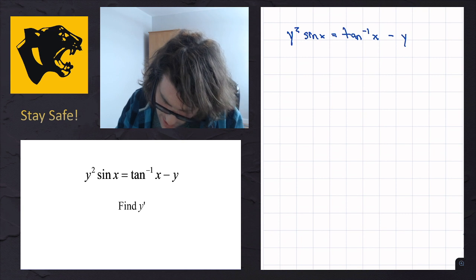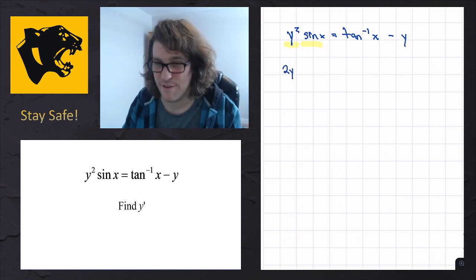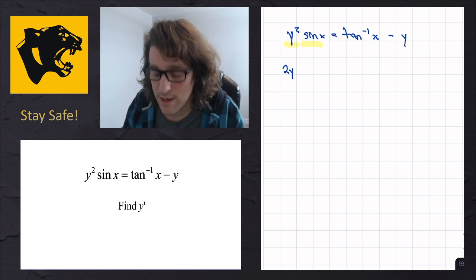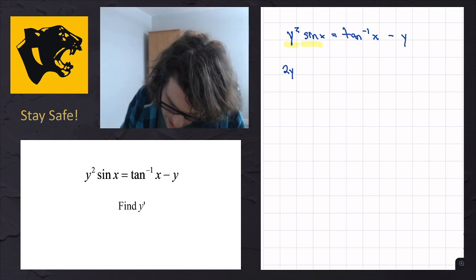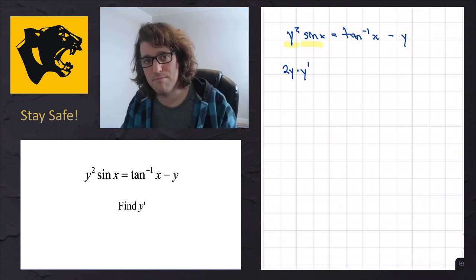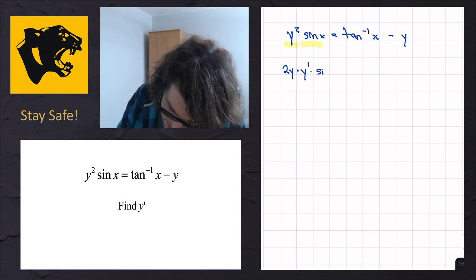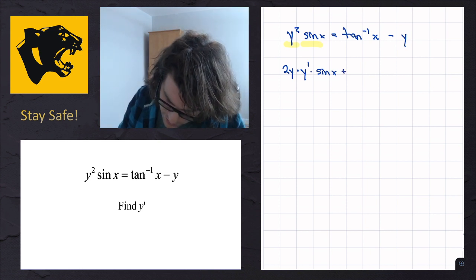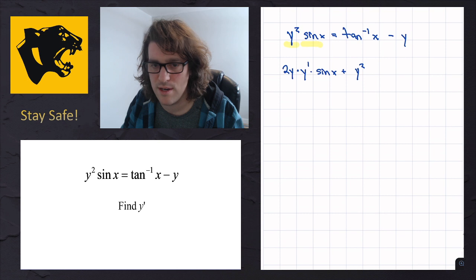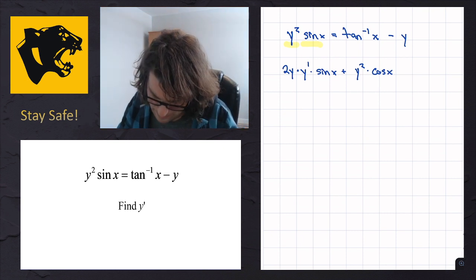We'll trick the equation into giving us y′ by taking the derivative of both sides simultaneously. The left hand side is a product rule with two chunks. The derivative of the first chunk, y squared, is 2y — but since y is a function of x, we apply the chain rule and multiply by y′. That's 2y·y′ times sine x. Then we add the second part of the product rule: y squared times the derivative of sine x, which is cosine x — no implicit differentiation needed since that's purely in terms of x.